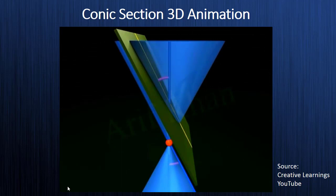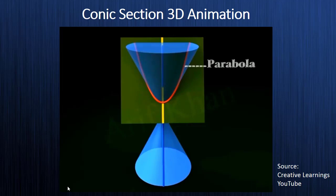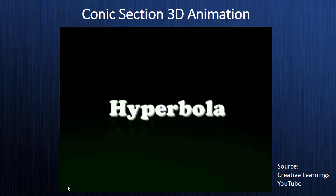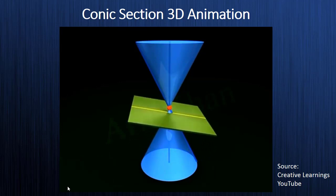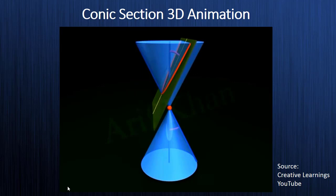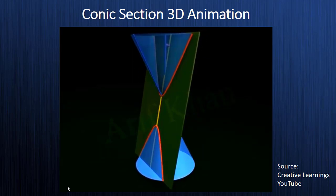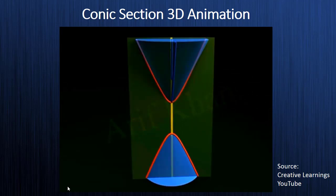When the angle made by the plane to the vertical axis is exactly equal to the vertex angle, we get an open curve called a parabola. For a hyperbola, if the plane intersects the vertical axis at an angle smaller than the vertex angle, the plane intersects both nappes of the cone to form an open curve called a hyperbola, which has two disjoint curves.